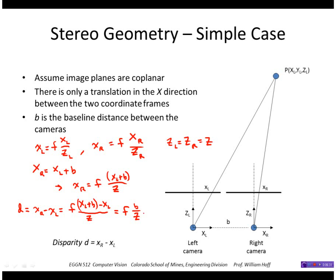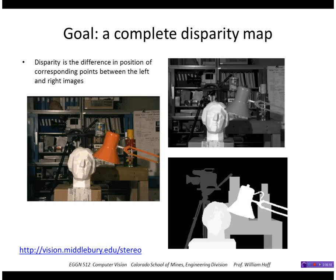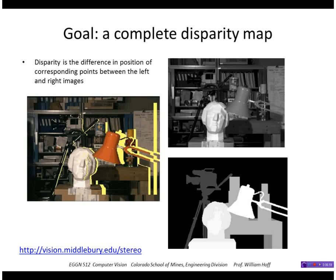Or if I wanted to determine z, I could get that from f*b over the disparity. So you can see that as the disparity increases, the z value is smaller. As the disparity decreases, the point gets further away. So the goal is to compute a complete disparity map. This shows a sequence of images, more than two actually, and the derived stereo disparity map from that.